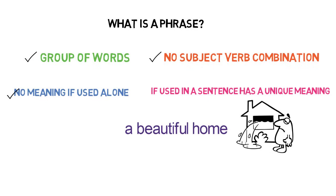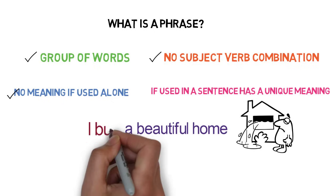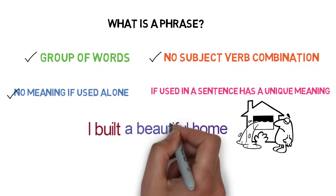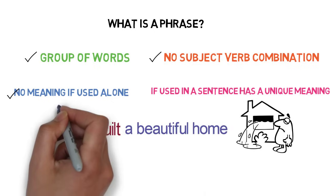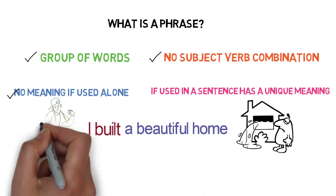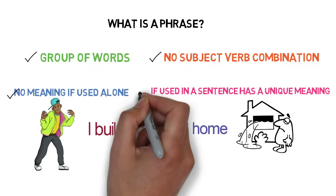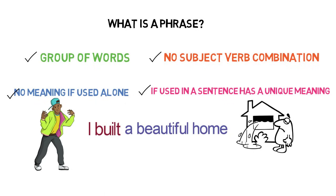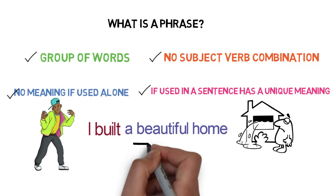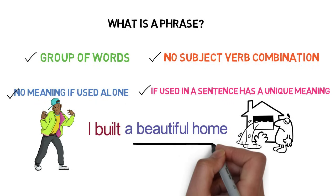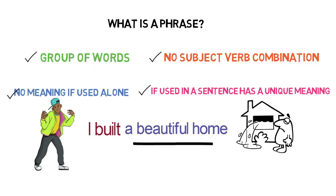Let me use this group of words in a sentence: 'I built a beautiful home.' Is this group of words now conveying any meaning? Yes, it is. So 'a beautiful home' satisfies all four conditions and hence it is a phrase.